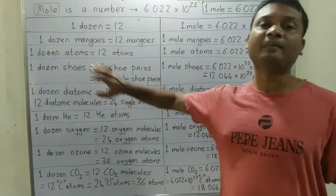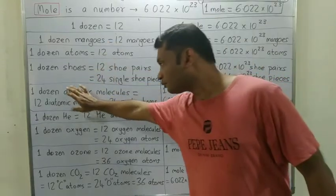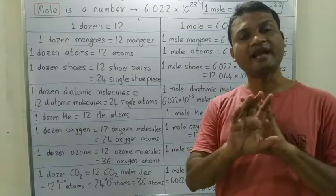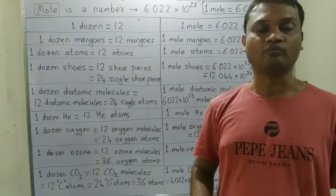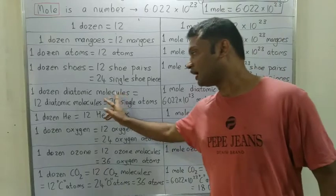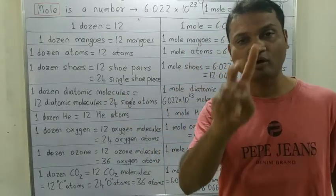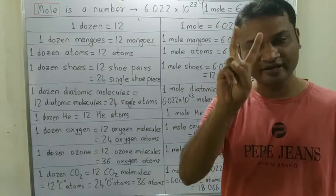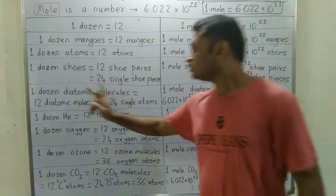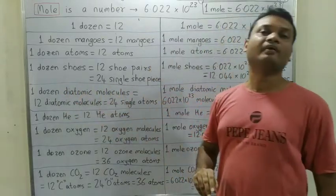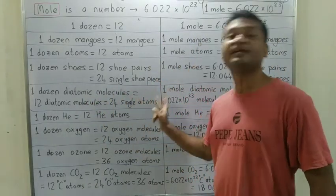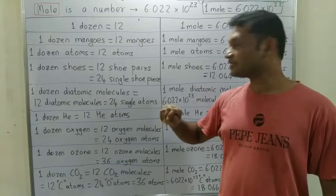Yeh example meinne kyu liya — shoes ka, earrings ka — because kuch molecules, jaise oxygen, are diatomic. Oxygen akele nahi rahta, it is in diatomic form. Just like earrings hum logon ko hamesha do milenge, shoe bhi hamesha do milenge. Waise hi oxygen hamesha ek molecule mein do atoms se bana hota hai. In one oxygen molecule, we have two oxygen atoms.